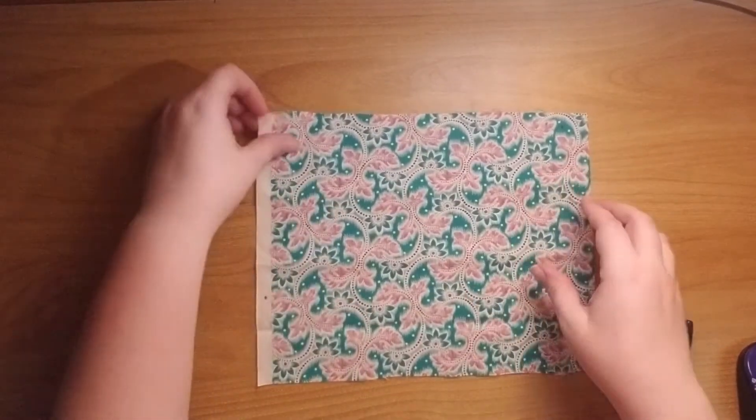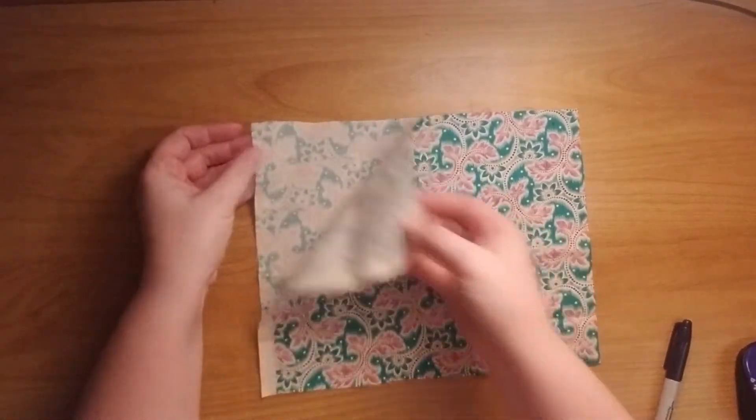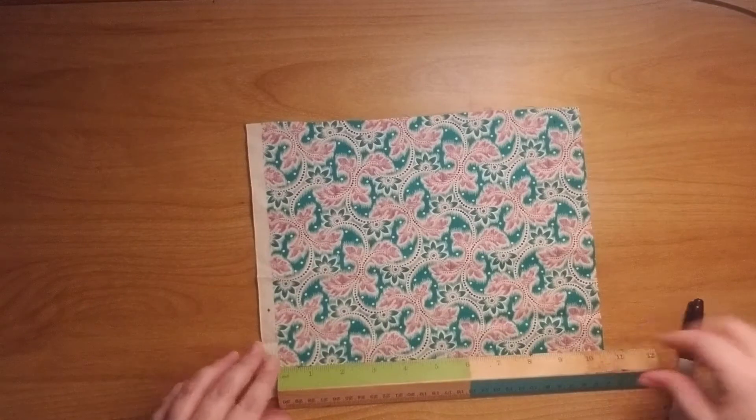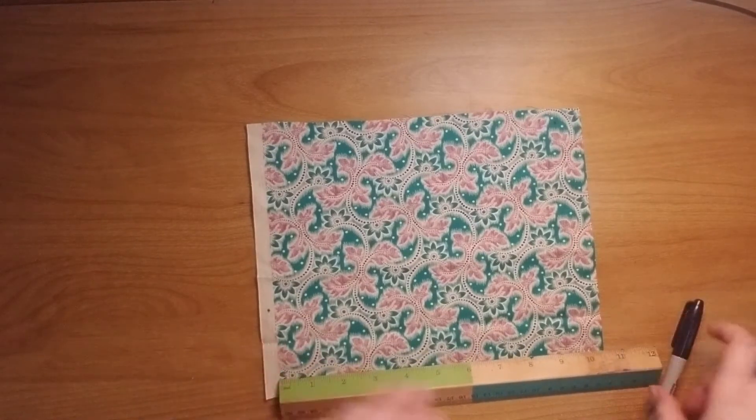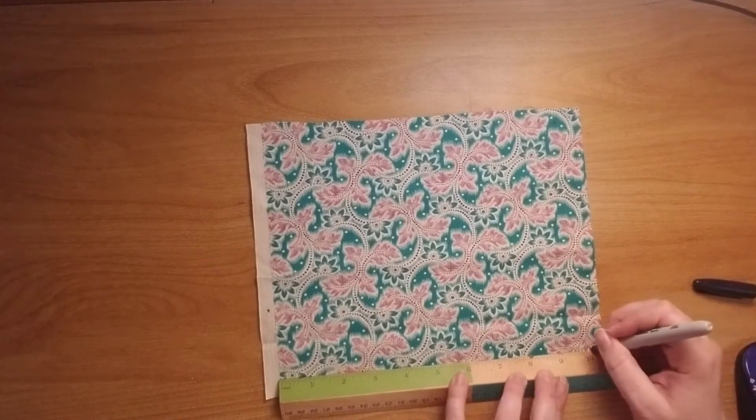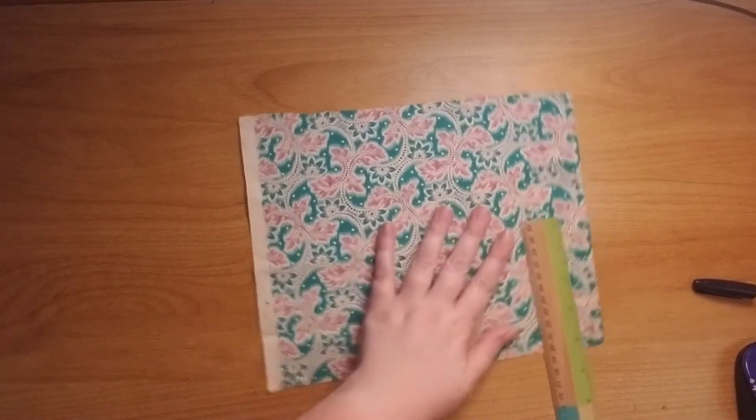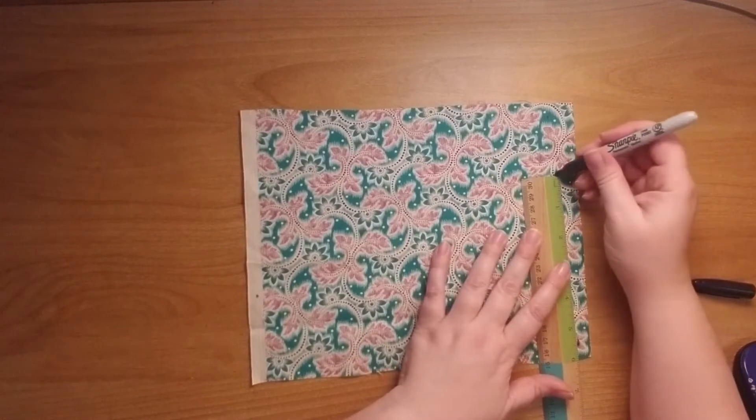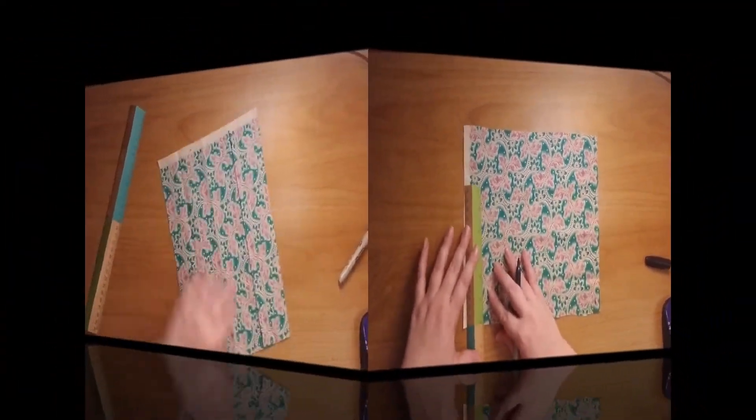So you're going to start with two pieces of 10 by 6 cloth. So I have my two pieces of cloth next to each other and I'm going to measure 10 by 6. Cut that out.